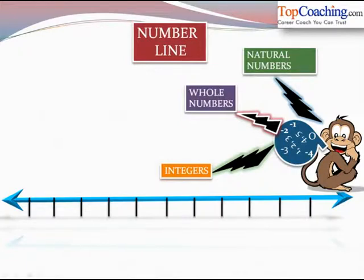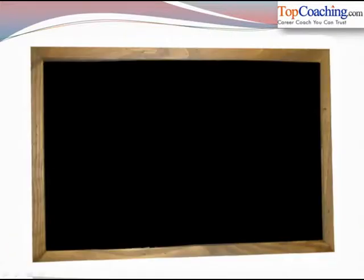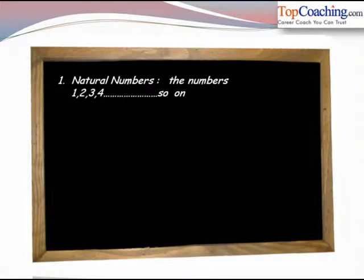Now one by one we are going to understand about natural numbers, whole numbers, and integers. So let's take the first case, natural numbers. The numbers 1, 2, 3, 4 and so on are known as natural numbers. So all the numbers which are on the right hand side of zero are known as natural numbers.